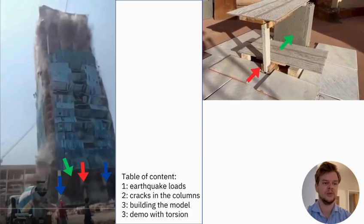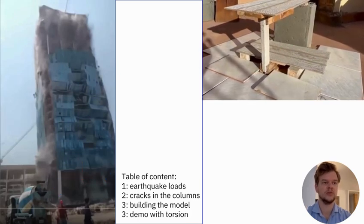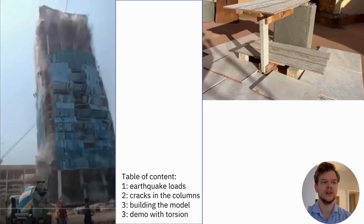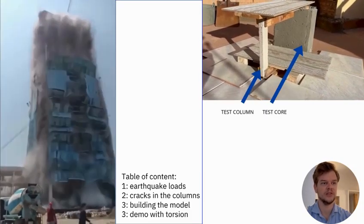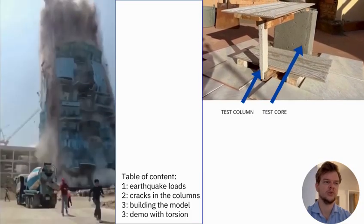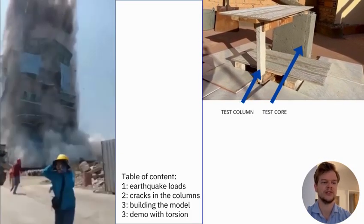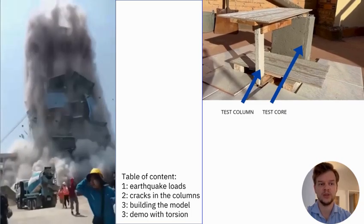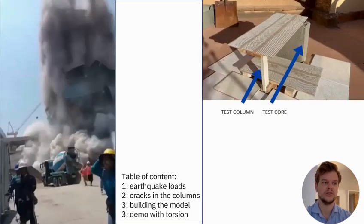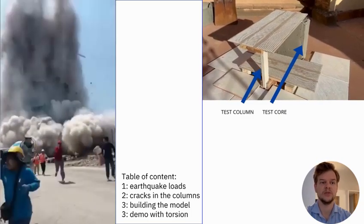We'll look at where things started to go wrong, then take a closer look at the visible damage and the cracking patterns in the columns and structural walls. Finally, using a small-scale demo model, we'll apply torsion to see if this failure mode can be reproduced and if our assumptions hold up.